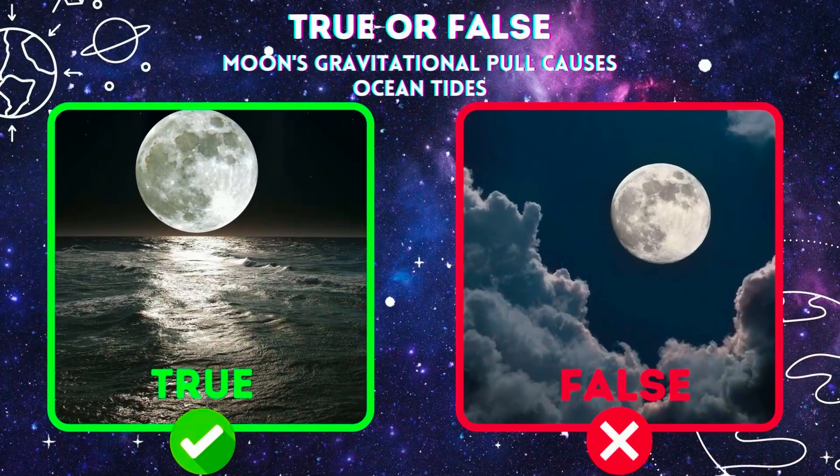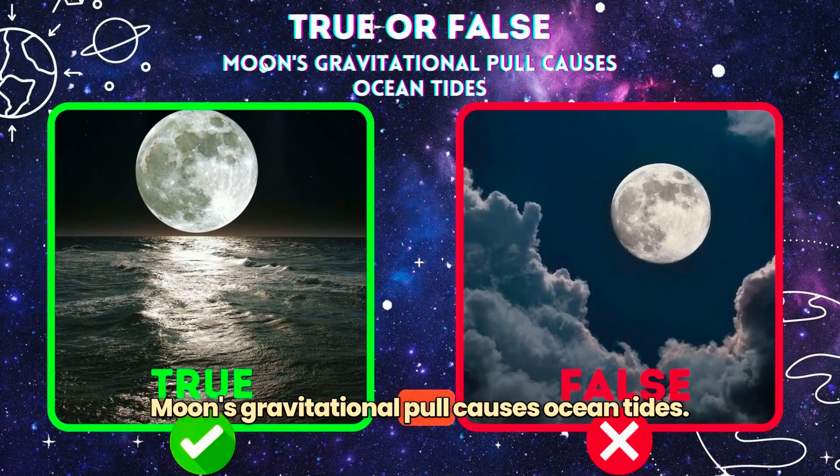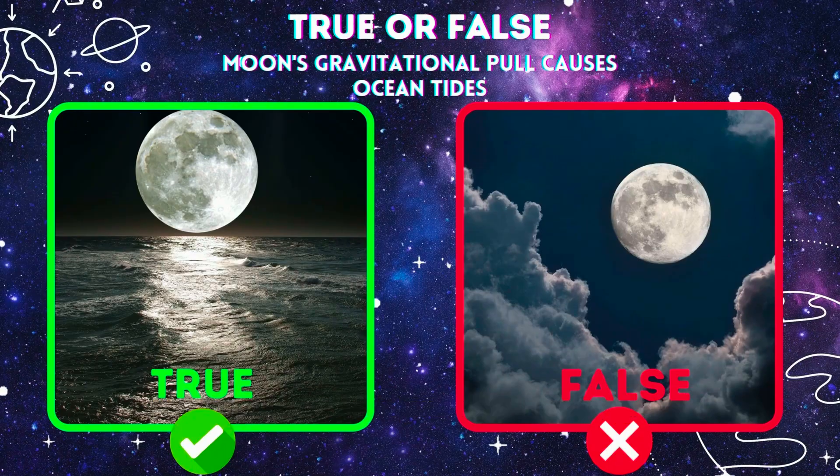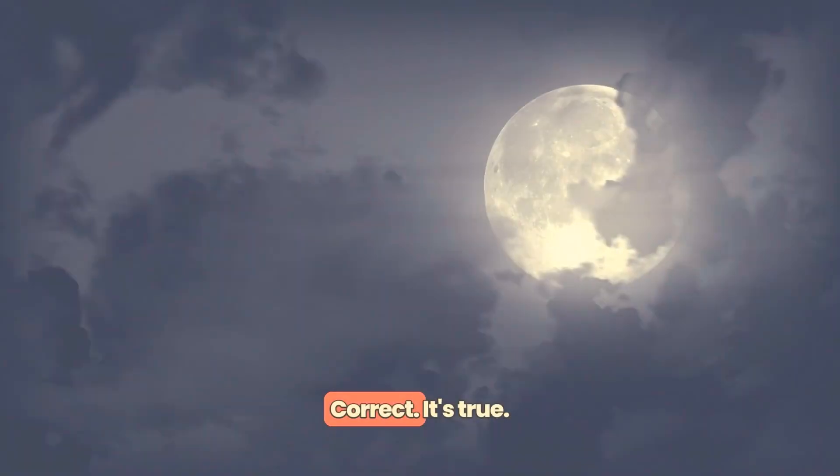True or false? Moon's gravitational pull causes ocean tides. Correct. It's true.